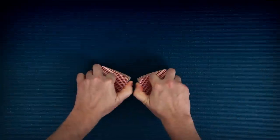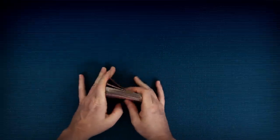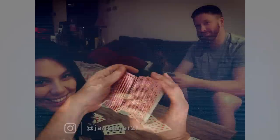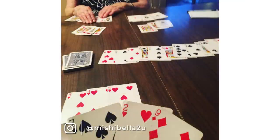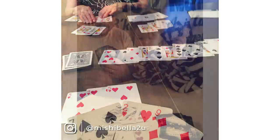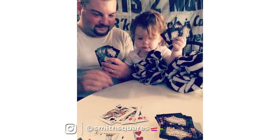Rummy 500 is played over several rounds. You try to create groups of cards called melds. Any card not grouped in a meld is called deadwood. At the end of each round, you gain points for your grouped melds and lose points for your leftover deadwood. The goal is to reach 500 points.